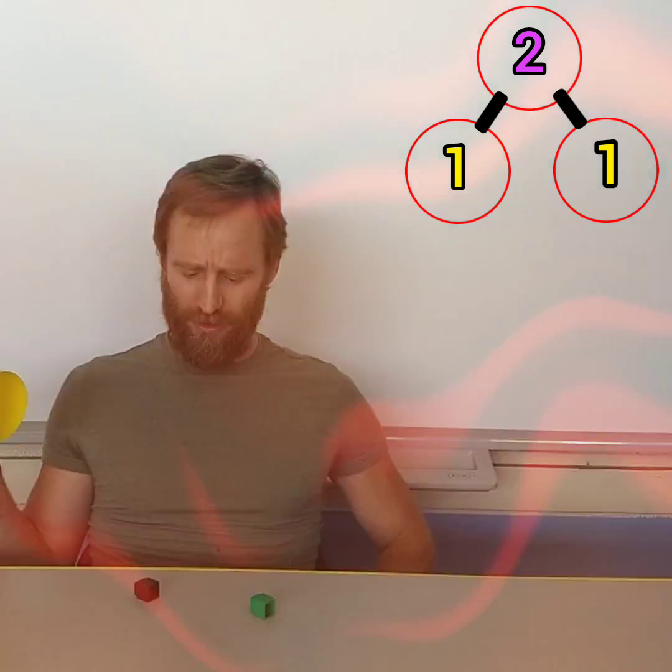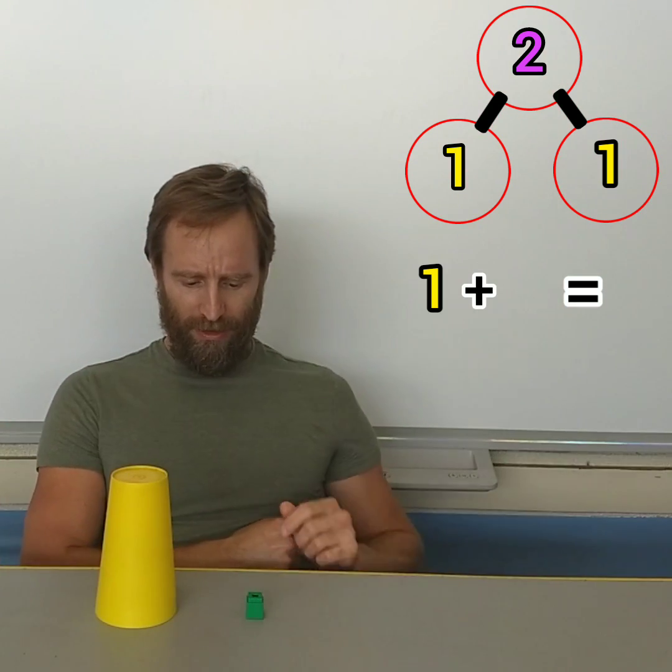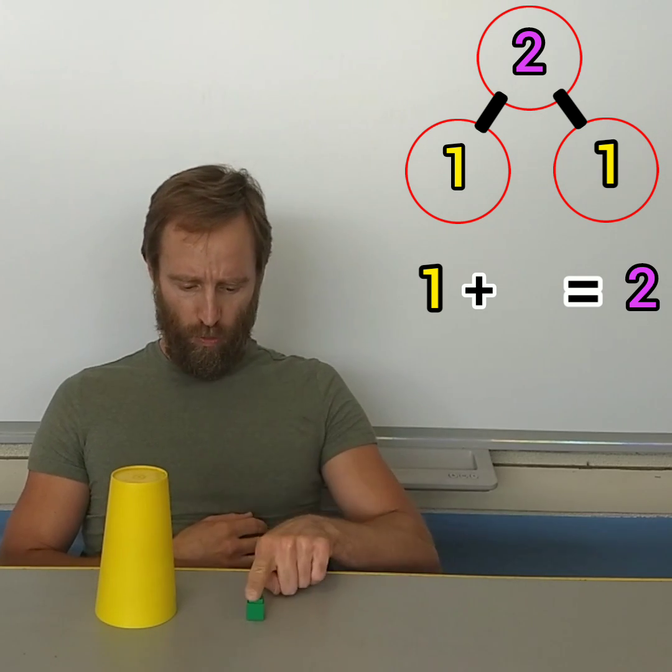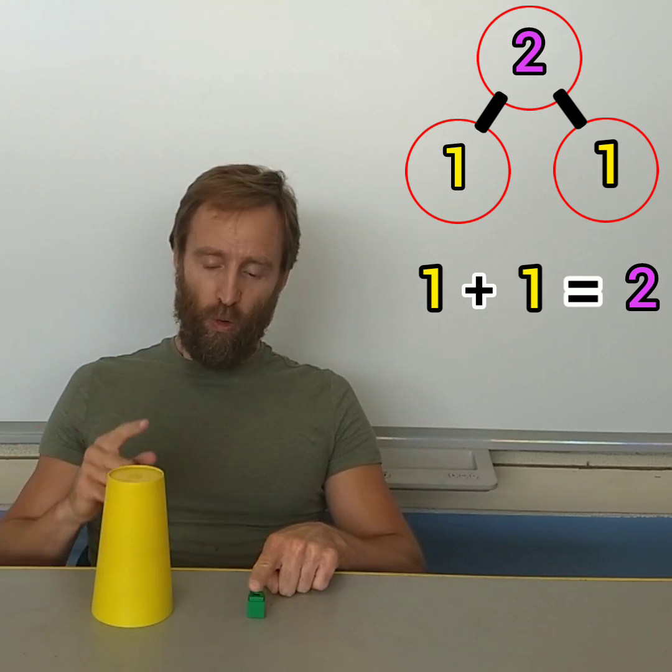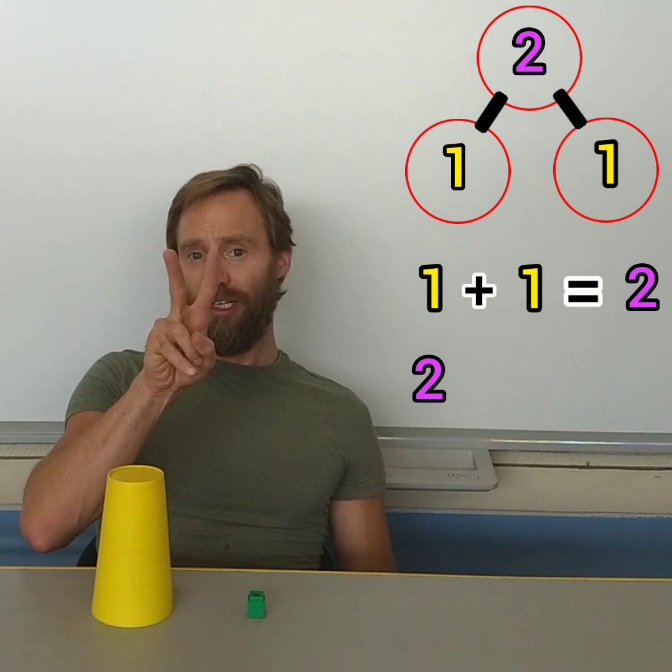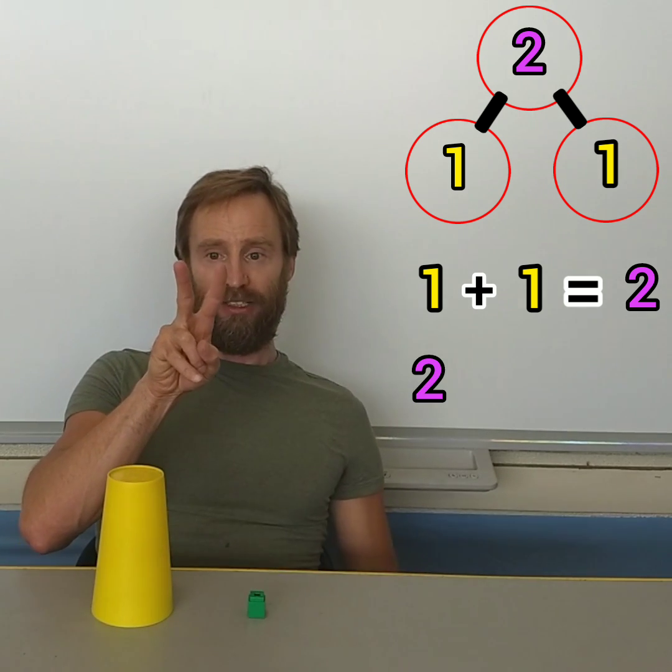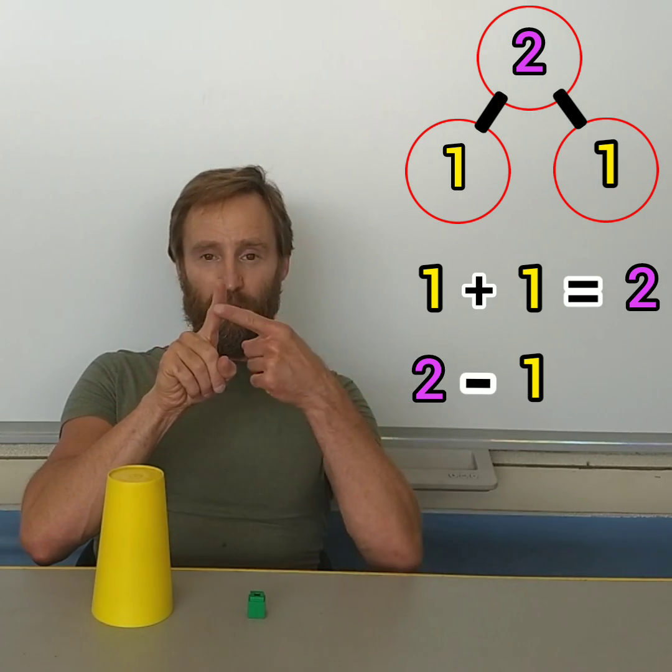Let's see, how did you figure that out? Well if there's one here and there's supposed to be two, that's one, two. Must be one under the cup. Or you could say we had two cubes but now I only see one. There must be one under the cup.